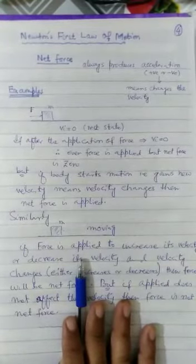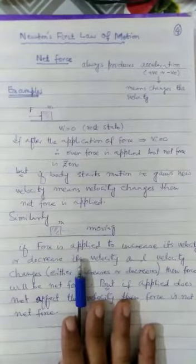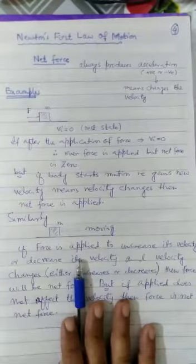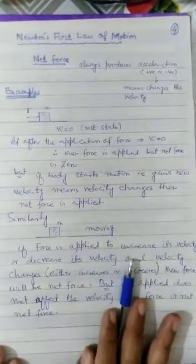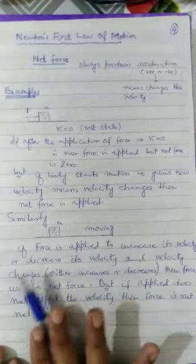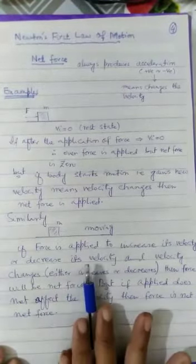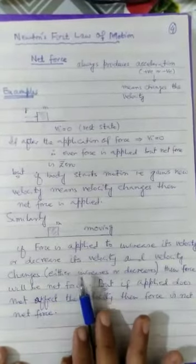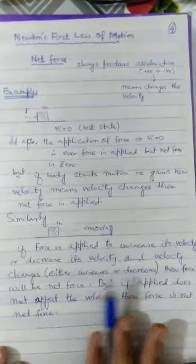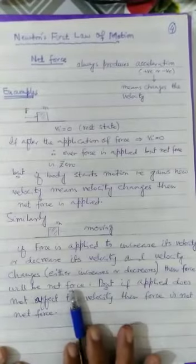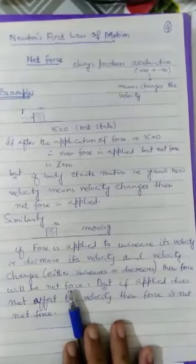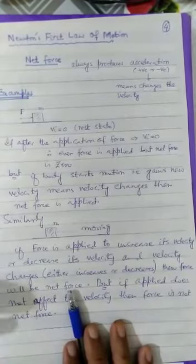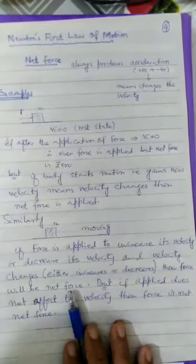Similarly, suppose if we have this object having mass M and moving with some particular velocity. And if force is applied to increase its velocity or decrease its velocity, you have two options. Moving bodies moving from one direction to another direction, and if you want to speed up the velocity or if you want to decrease the velocity.